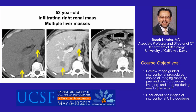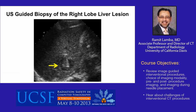This 59-year-old patient has an infiltrating mass in the right kidney with multiple masses in the liver. The lesion was very well seen at ultrasound, and the preferred guidance modality should be — and was — ultrasound for this patient.